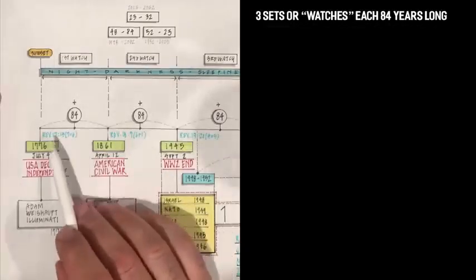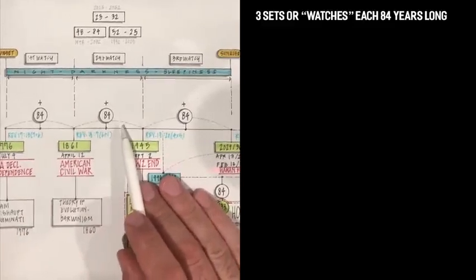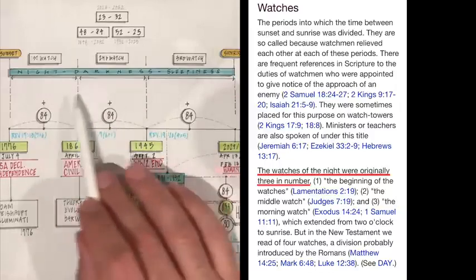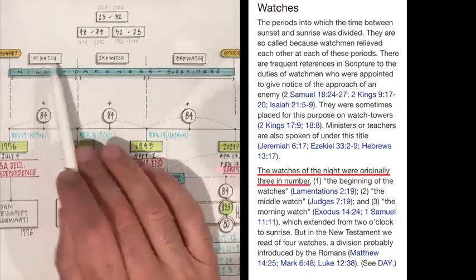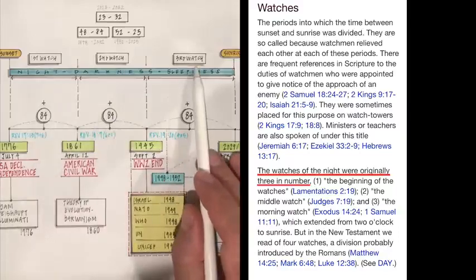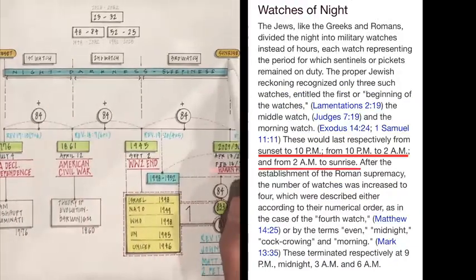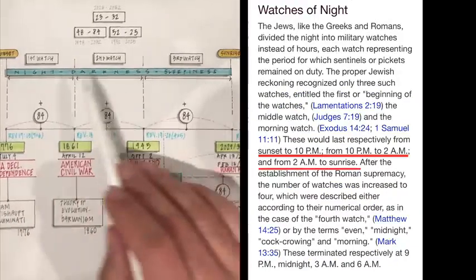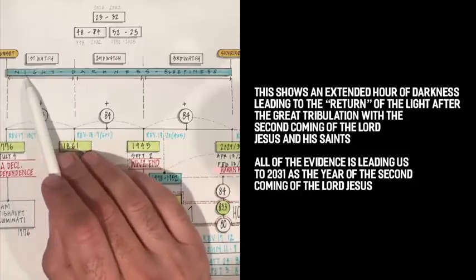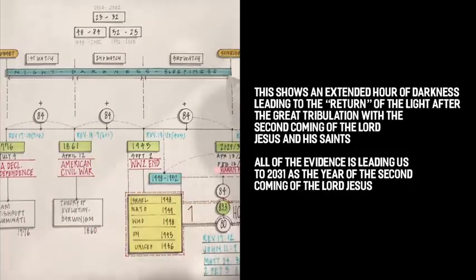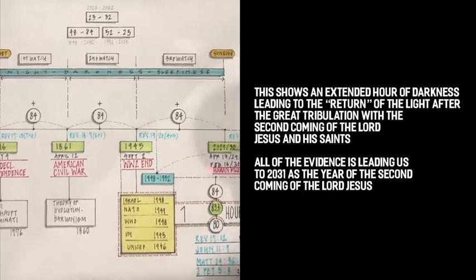When we look at it in context, we have three sets of 84 years. When we look at the original division of the night in the Old Testament, we know there were three watches, not four, going from sunset, the last bit of light, to sunrise when the light comes back. Meaning that there's a little bit of light in the beginning, and then it shifts into darkness, and it's darkness all the way until the light comes back, which lines up with the end of the second set, or last set, third set rather, of 84 years from 1945 to 2029 to 2030.